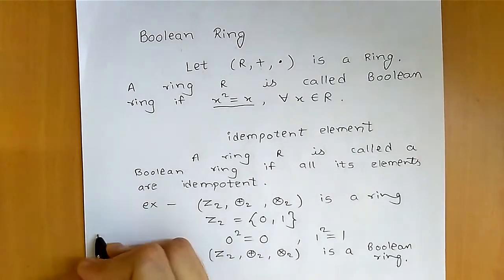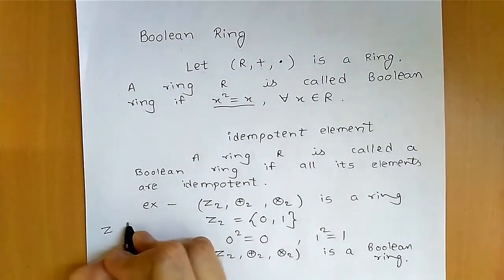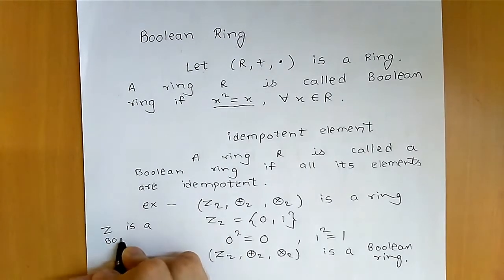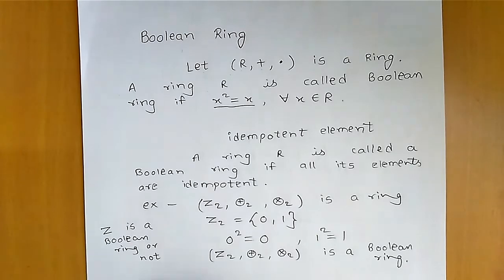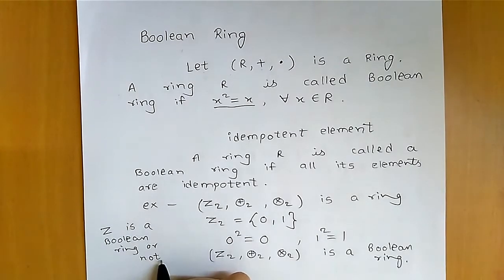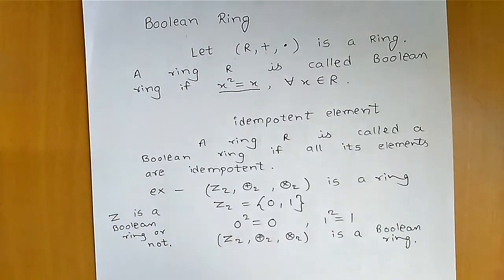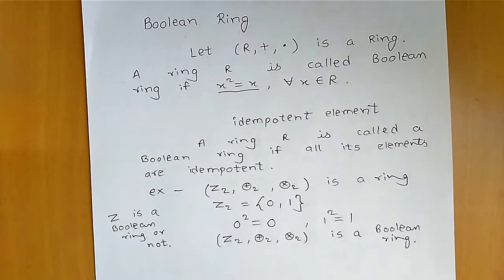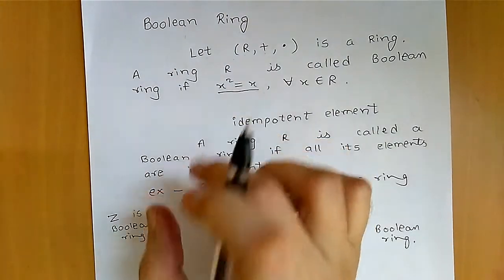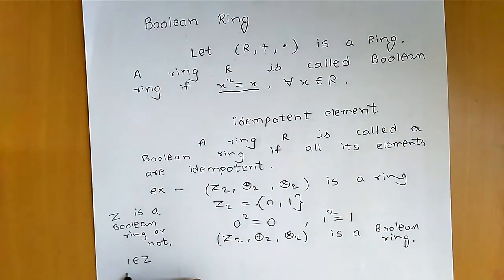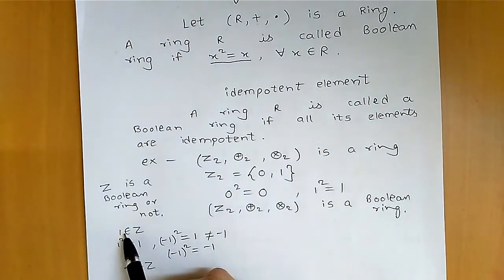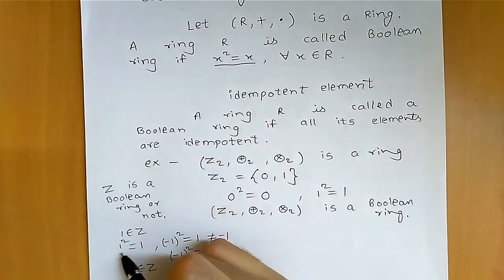We will see whether the set of integers Z is a Boolean ring or not. We have to show that Z is not a Boolean ring. We know that the set of integers is a ring. Now we take any element from Z and check whether it satisfies the property. For example, 1 belongs to Z, and 1 squared equals 1 — so 1 satisfies the property.